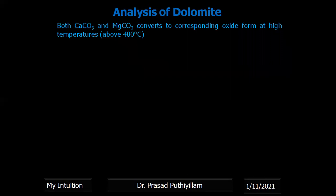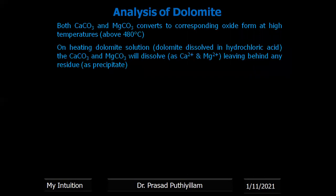The principle behind the estimation of dolomite involves two methods. Gravimetric method is used to identify the residues present, and titrimetric method — complexometric titration with EDTA — is used to find calcium as well as magnesium. Both calcium carbonate and magnesium carbonate can be converted into corresponding oxides at very high temperatures: above 480°C for calcium and above 750°C for magnesium carbonate.